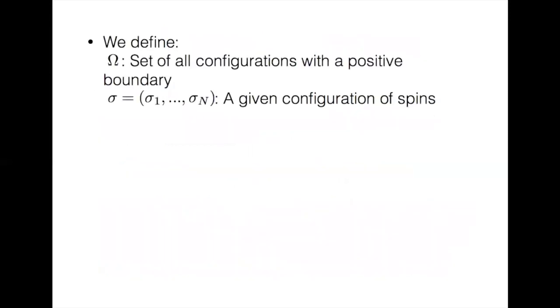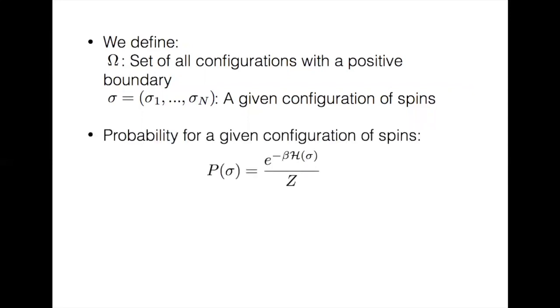We start by defining omega to be the set of all configurations with a positive boundary and sigma is a configuration of spins. The probability for a given configuration is then e to the negative beta h over z, where beta is 1 over kT, h is the Hamiltonian, and z is the partition function, which is the sum over all configurations of e to the negative beta h.